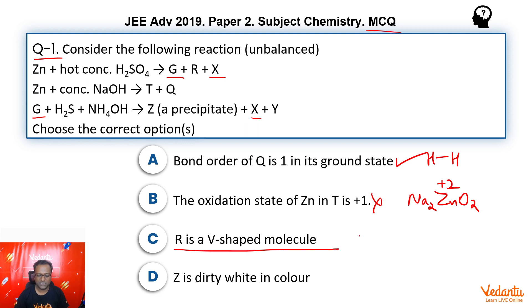R is a V-shaped molecule. What was R, guys? R was SO2. And SO2 is angular, bent, V-shaped, SP2 hybridized. So yes, R will be an answer.